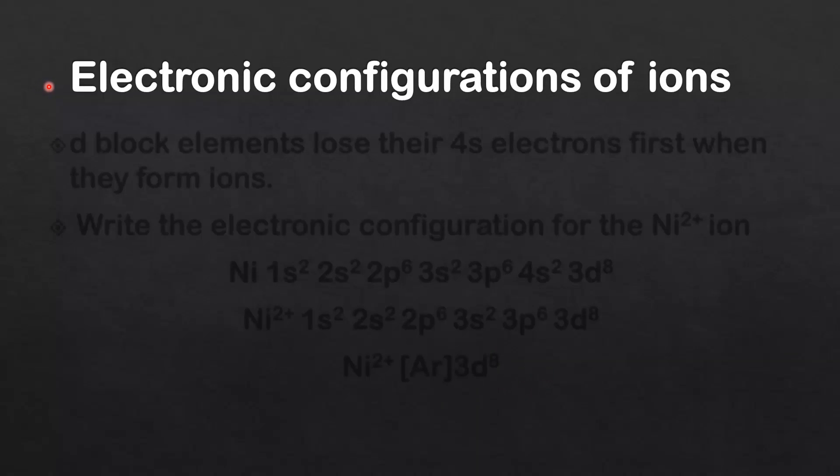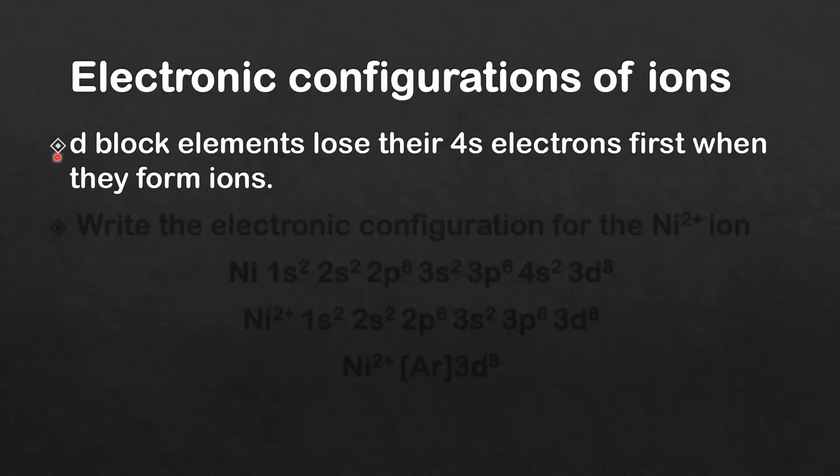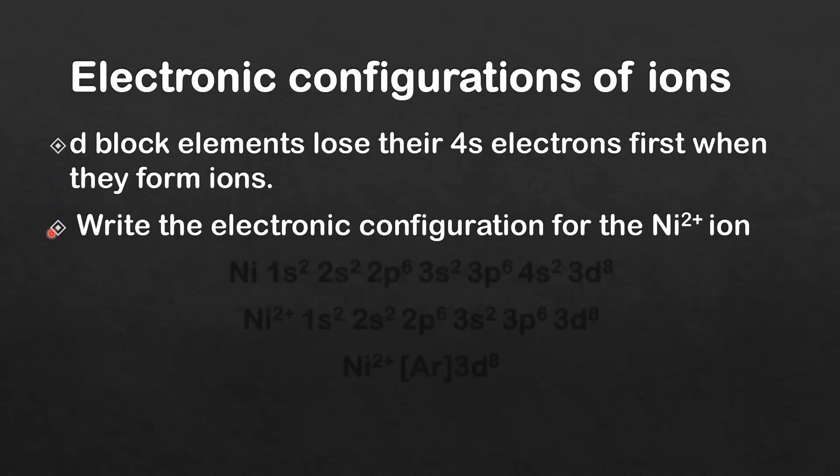So next I'll look at the electronic configuration of ions. So I'm going to focus on d-block elements. d-block elements lose their 4s electrons first when they form ions. So let's look at an example. Write the electronic configuration for the nickel 2 plus ion.